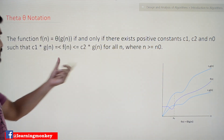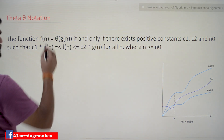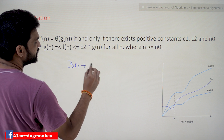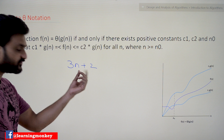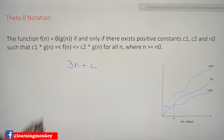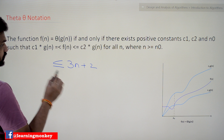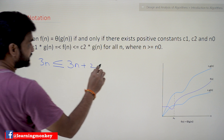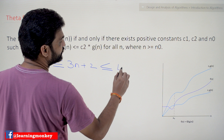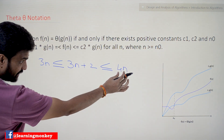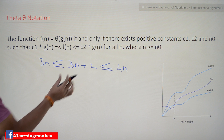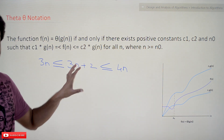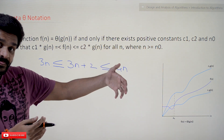So let's try to solve this. We will take the time complexity of any equation. For example, if we take 3n plus 2, this is the time complexity and this is our f of n. This f of n should be greater than or equal to 3n — we will consider 3n as we have in the Omega notation — and this f of n should be less than or equal to 4n. So this is the tightest upper bound and this is the tightest lower bound.